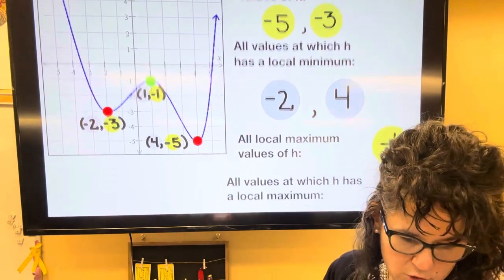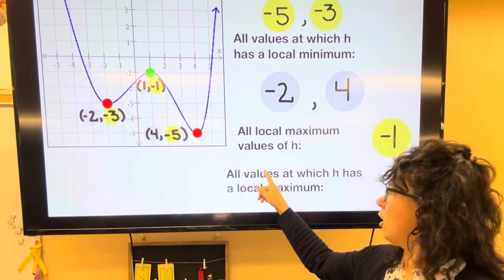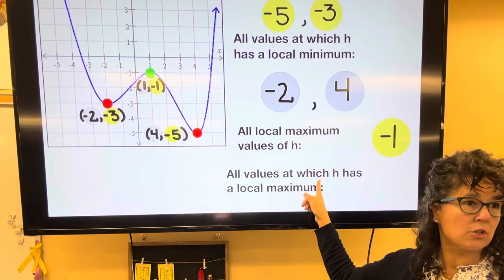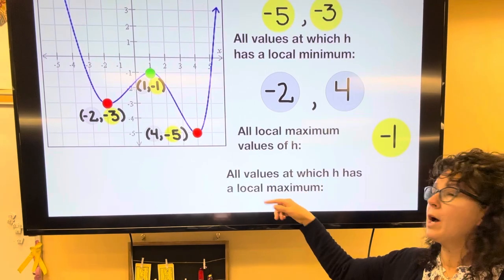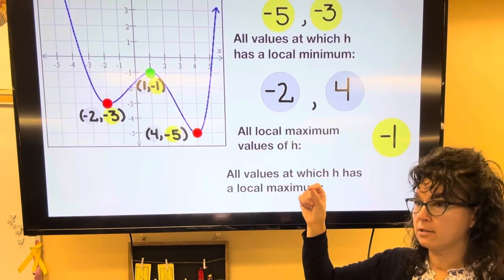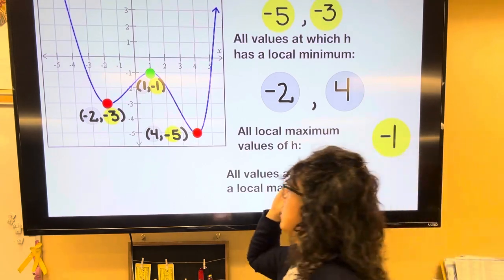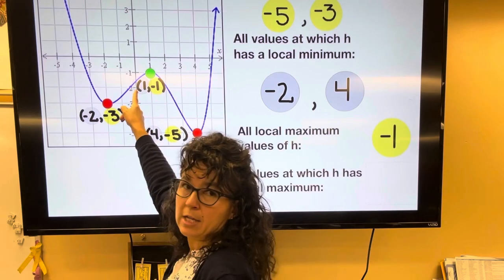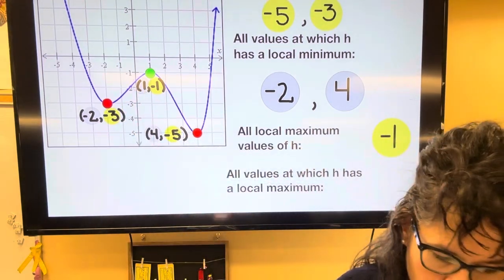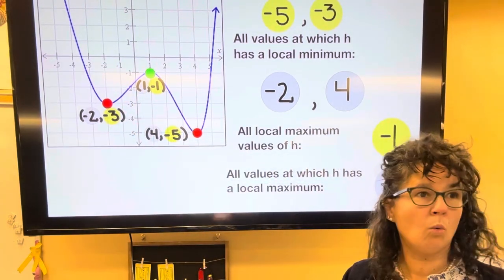And then the last question here, all values at which, so in other words, what X's create the local maximum? So here's my local maximum. And they're asking us for the X coordinate. So that one is going to be 1.